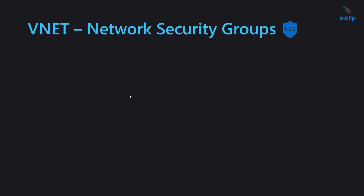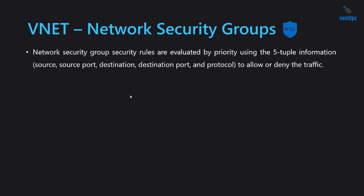Before creating our first network security group, let us know a few important points about NSGs. Network security group security rules are evaluated by priority using the five-tuple information to allow or deny the traffic. Five-tuple information is: source, source port, destination, destination port, and protocol. In an NSG, rules with the lowest number have the highest priority, and each rule will be evaluated based on their priority number and five-tuple information to control the traffic flow.